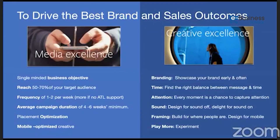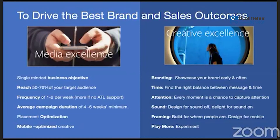For media excellence: target a single-minded business objective. Your campaign should try to reach 50–70% of your target audience with the right frequency — at least two per week if ATL support such as TV, radio, or press is not available. Average campaign duration is 4 to 6 weeks. Use placement optimization — we suggest automatic placement. With mobile-optimized creative, the majority of campaigns run with 95% of ad delivery on mobile devices, making mobile optimization the main trigger for campaign success.